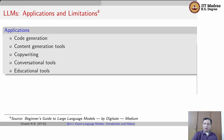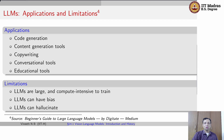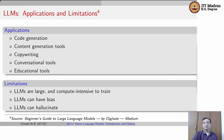The applications these LLMs have been used for include code generation, content generation, copywriting, conversational tools, educational tools, and more. But they do have some limitations: they are large and compute-intensive to train, can have bias, and one of the most pointed-out limitations is that LLMs can sometimes hallucinate and make a user believe that the given output is actually true.